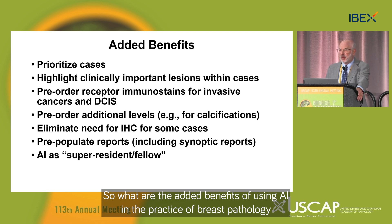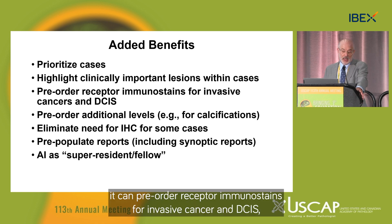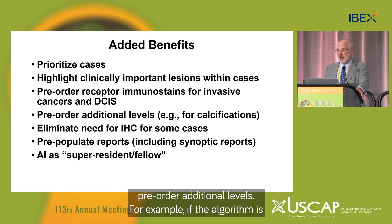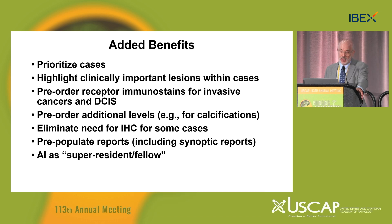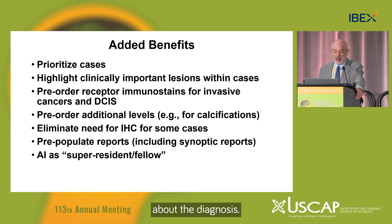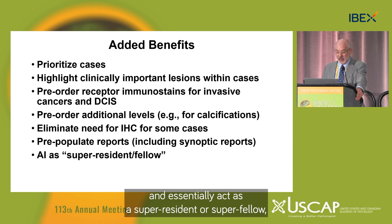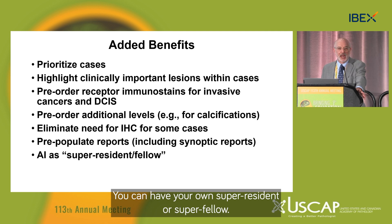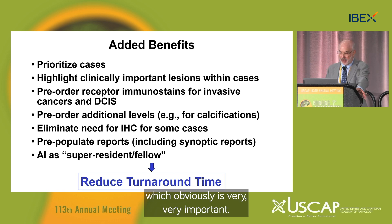What are the added benefits of using AI in breast pathology? It can prioritize cases and highlight clinically important lesions. It can pre-order receptor immunostains for invasive cancer and DCIS, saving time. It can pre-order additional levels — for example, if the algorithm detects calcifications absent from the biopsy. It can eliminate the need for IHC in some cases, pre-populate reports including synoptic reports, and essentially act as a super resident or super fellow. All of this will help reduce turnaround time.